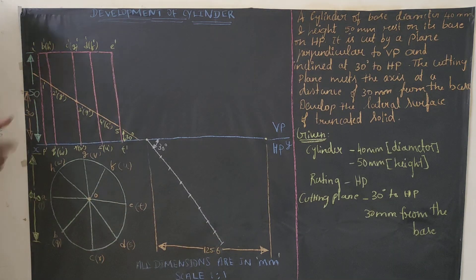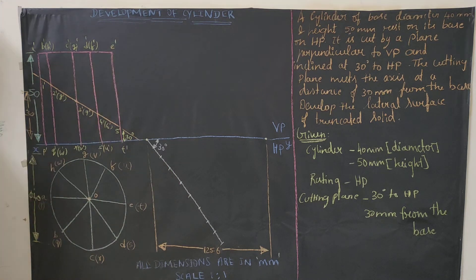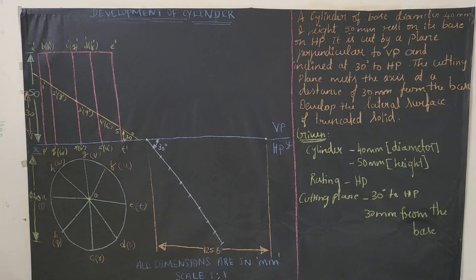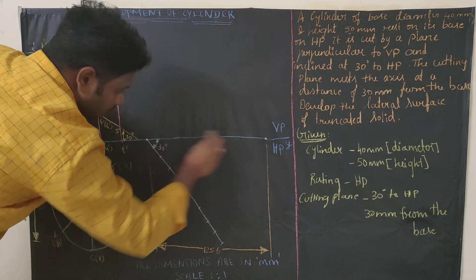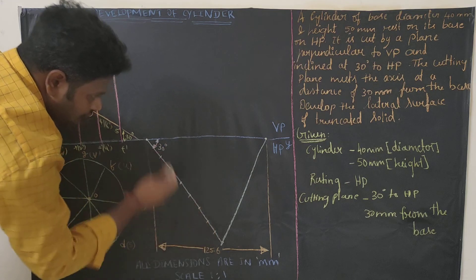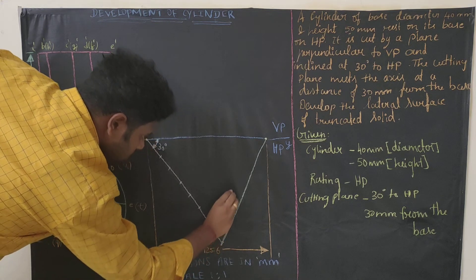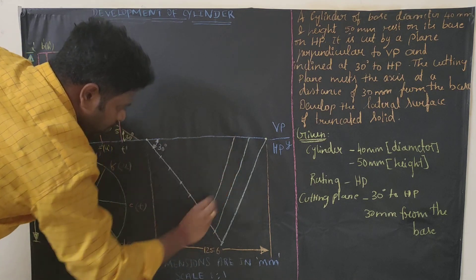On the inclined line, mark 8 equal parts each of 10 mm — so 10, 20, 30, 40, 50, 60, 70, 80 mm — giving 8 parts totaling 80 mm. You can use a compass or scale to mark these points. Then connect the last point of the inclined line to the end of the 125.6 mm line, and draw lines from each of the 8 points parallel to this connecting line to divide the base into 8 equal parts.